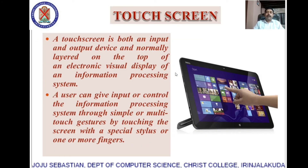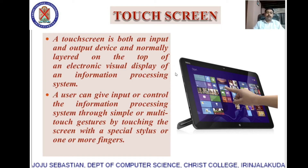Touch screen. A touch screen is both an input and an output device, normally layered on the top of the electronic visual display — the monitor — of an information processing system, that is, a computer. A user can give input or control the computer through simple or multi-touch gestures by touching the screen with a special stylus or one or more fingers.